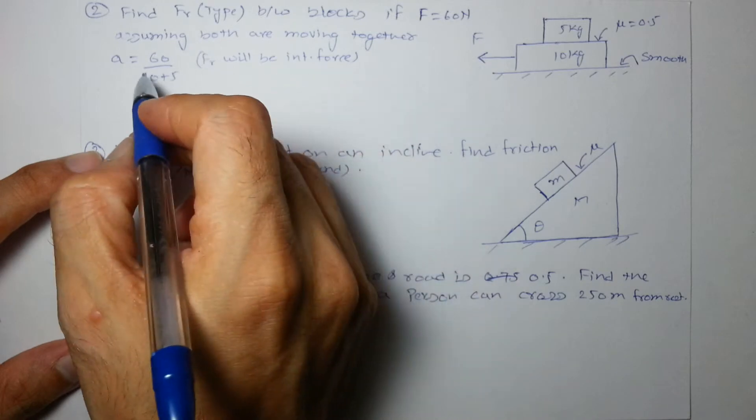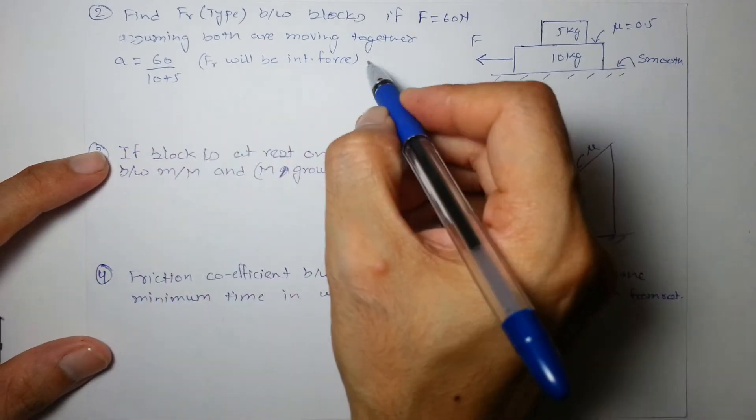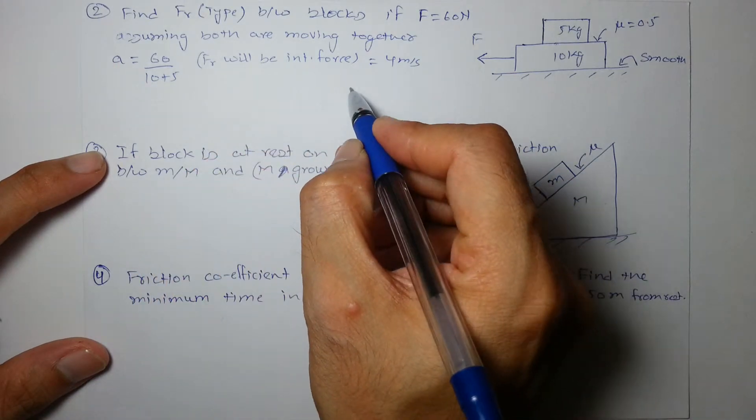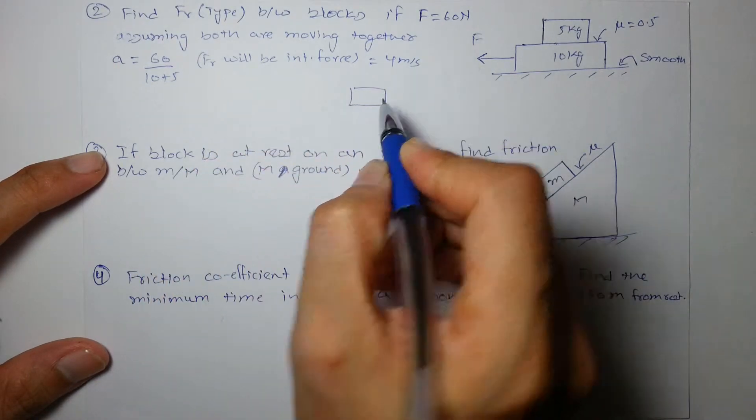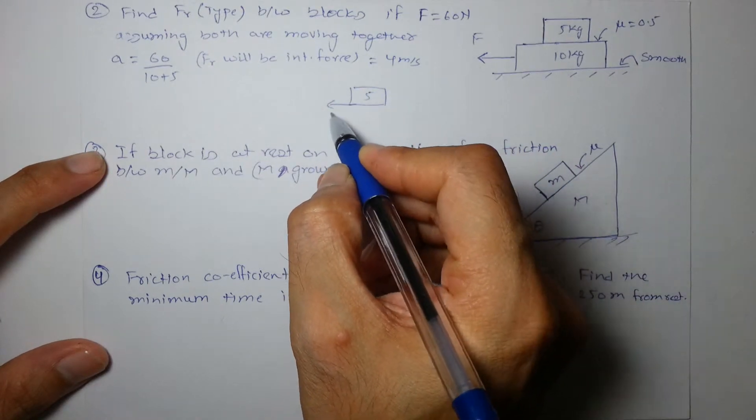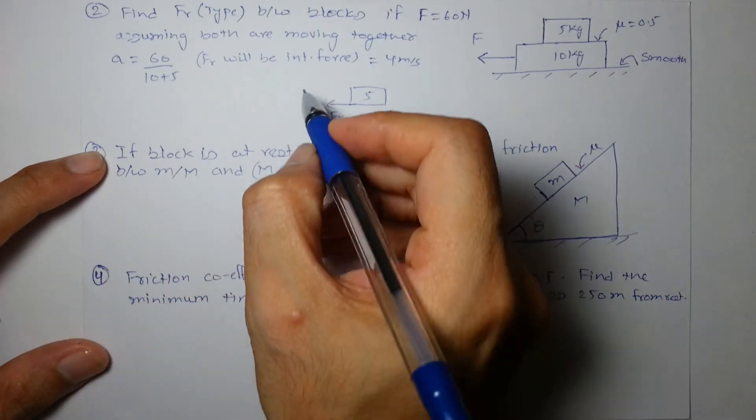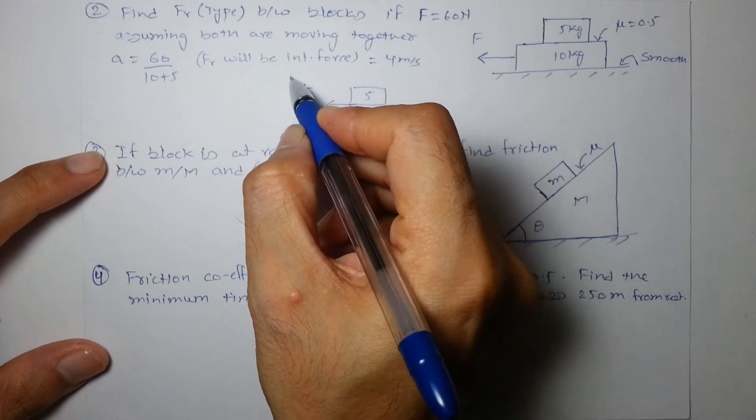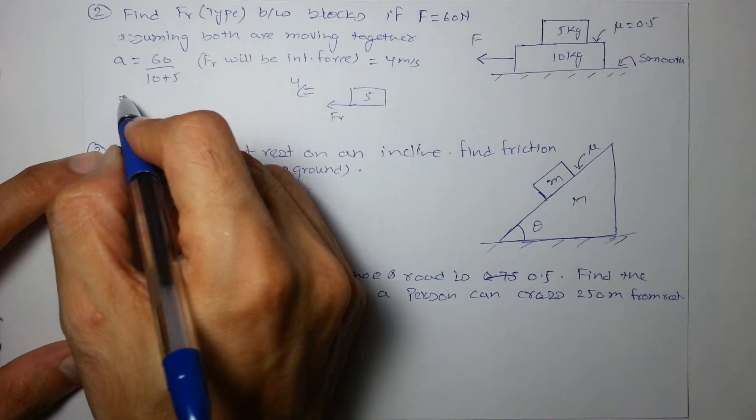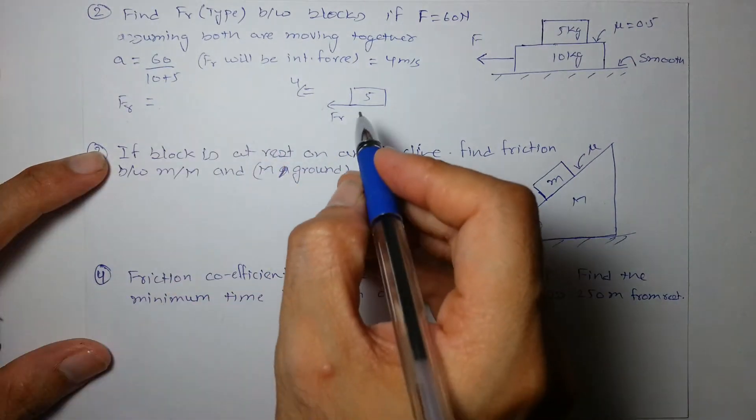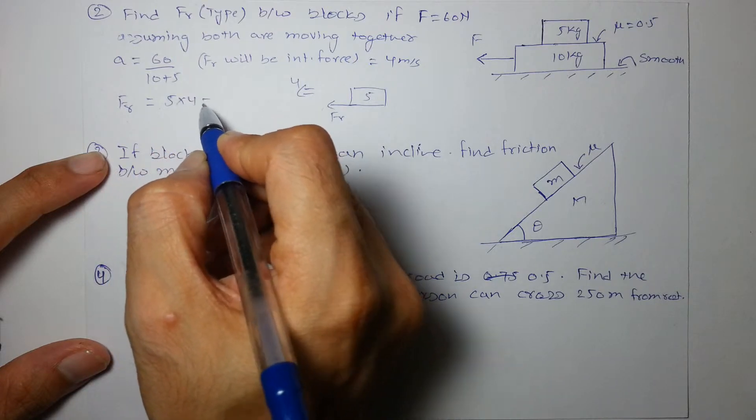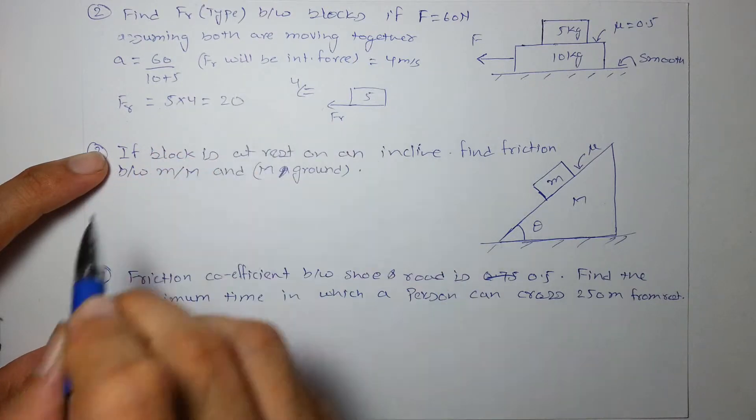We can simply say acceleration is nothing but 4 meter per second square. Let's draw the FBD of the upper block which is 5 kg and it will be accelerating due to friction alone and its acceleration is 4 as both are moving together. So the friction force acting as per assumption is nothing but Ma, mass is 5 and acceleration is this.